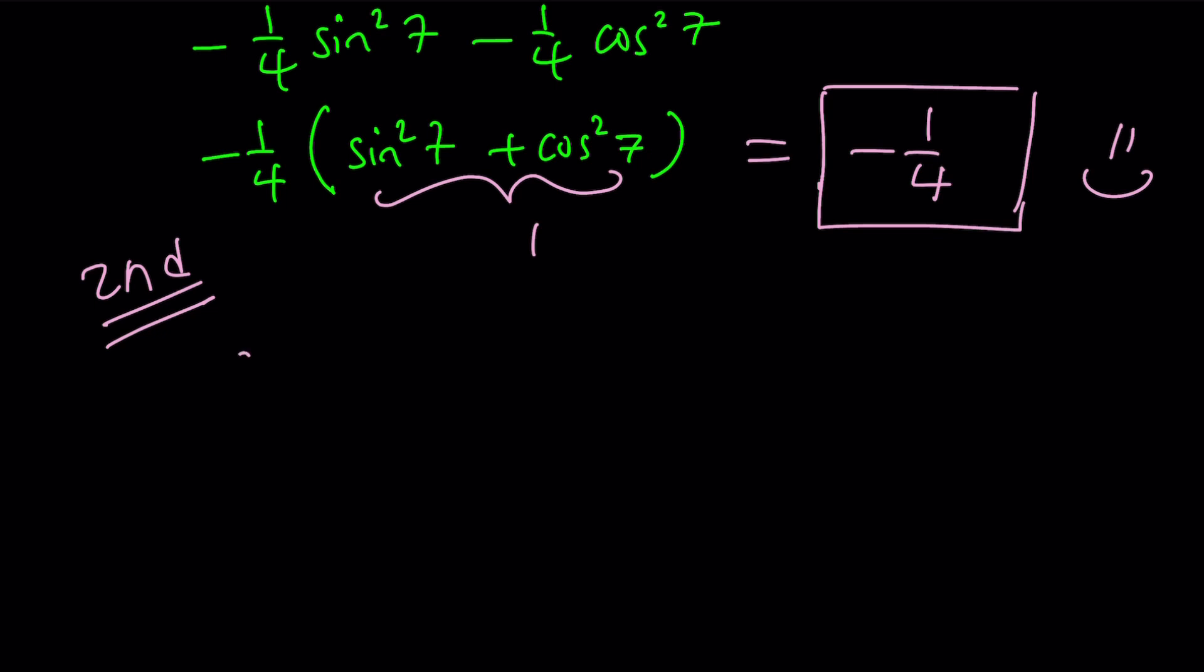So for the second method, let me rewrite the problem. Sine 67 multiplied by sine 7. I'm reminding you, these are all in degrees.